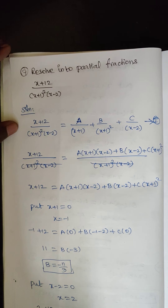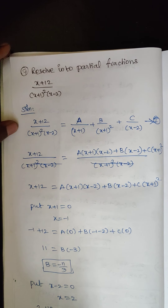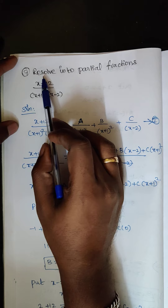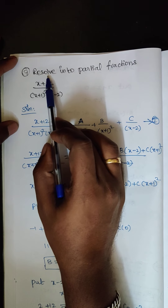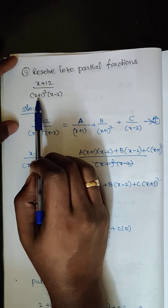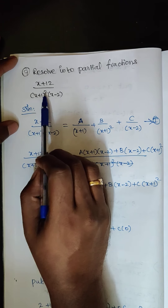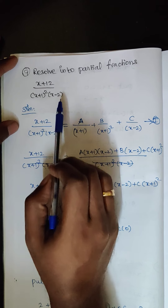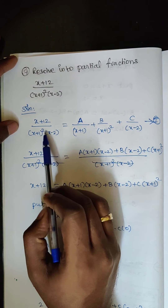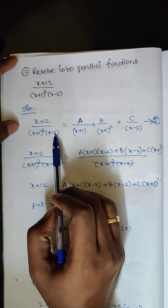Hi students, this is Thinis here. Now we are going to discuss exercise 2.9, question number 9: resolve into partial fractions (x + 12) divided by (x + 1)² into (x − 2).